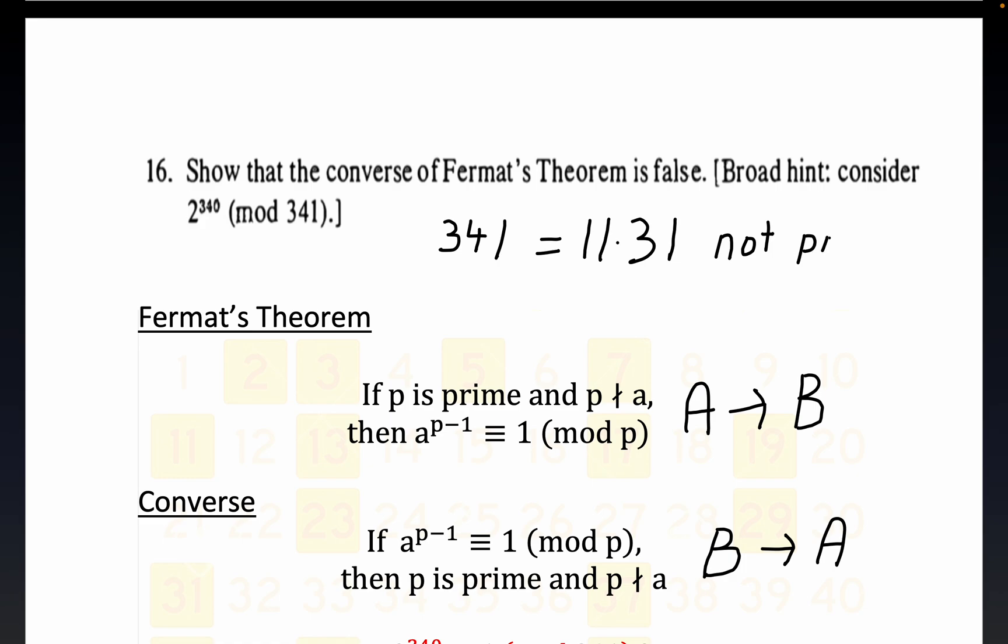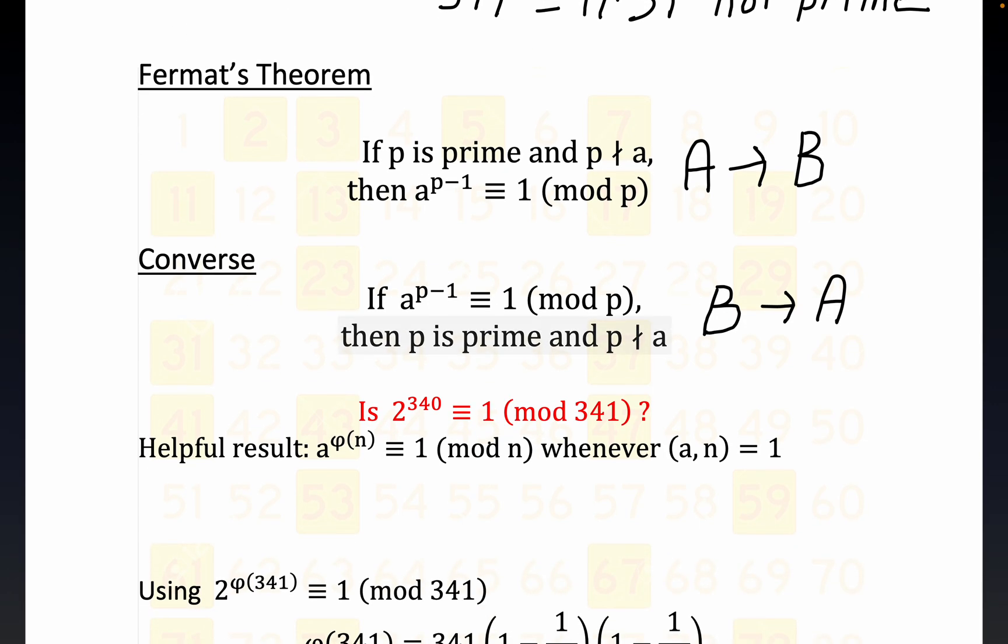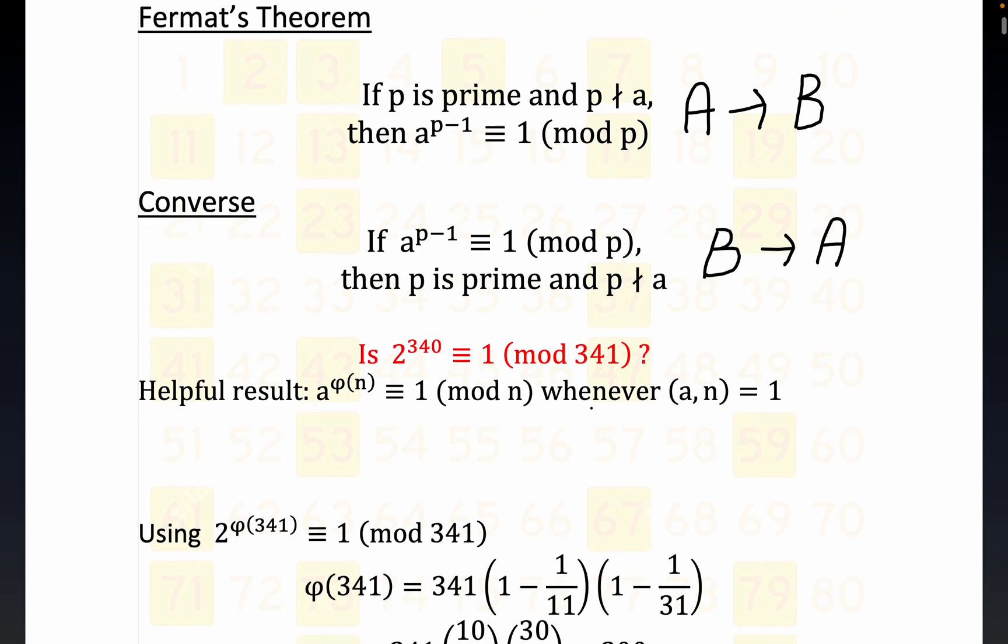That gives one an idea how to proceed here. It's just a matter of showing that it's congruent to one, that it's not a prime number, and that will be done. So our question is: is 2 to the 340 congruent to 1 mod 341? Because that will be a counterexample that will show that the converse is not true.